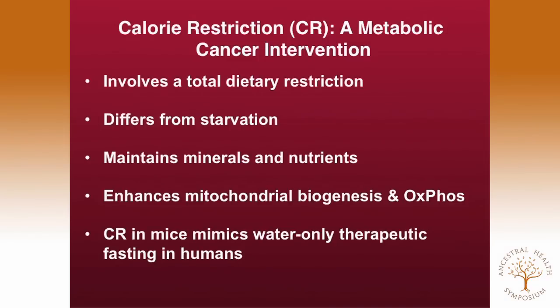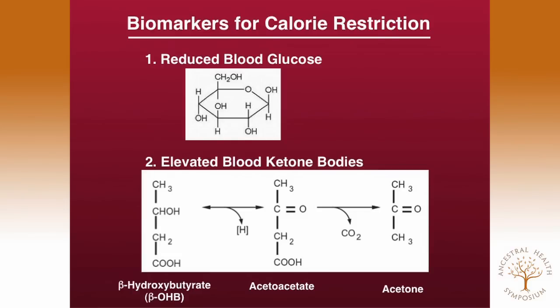We have used calorie restriction and restricted ketogenic diets as a metabolic approach to cancer management. Calorie restriction involves total dietary restriction and differs from starvation in that it can maintain adequate levels of minerals and nutrients. Done correctly, with attention to the correct biomarkers, calorie restriction will enhance mitochondrial biogenesis and increase efficiency of oxidative phosphorylation. It's important to recognize that calorie restriction in the mouse mimics therapeutic water-only fasting in humans, because the basal metabolic rate of the mouse is seven times that of the human. The biomarkers for calorie restriction are reduced blood glucose and elevated ketone bodies.